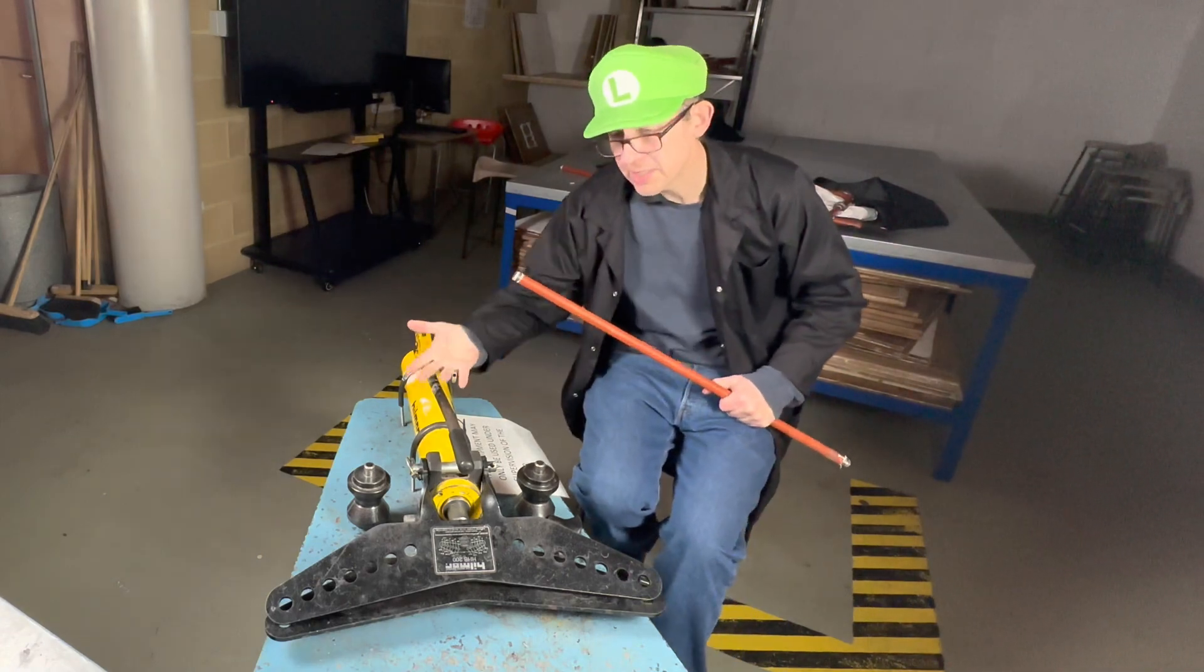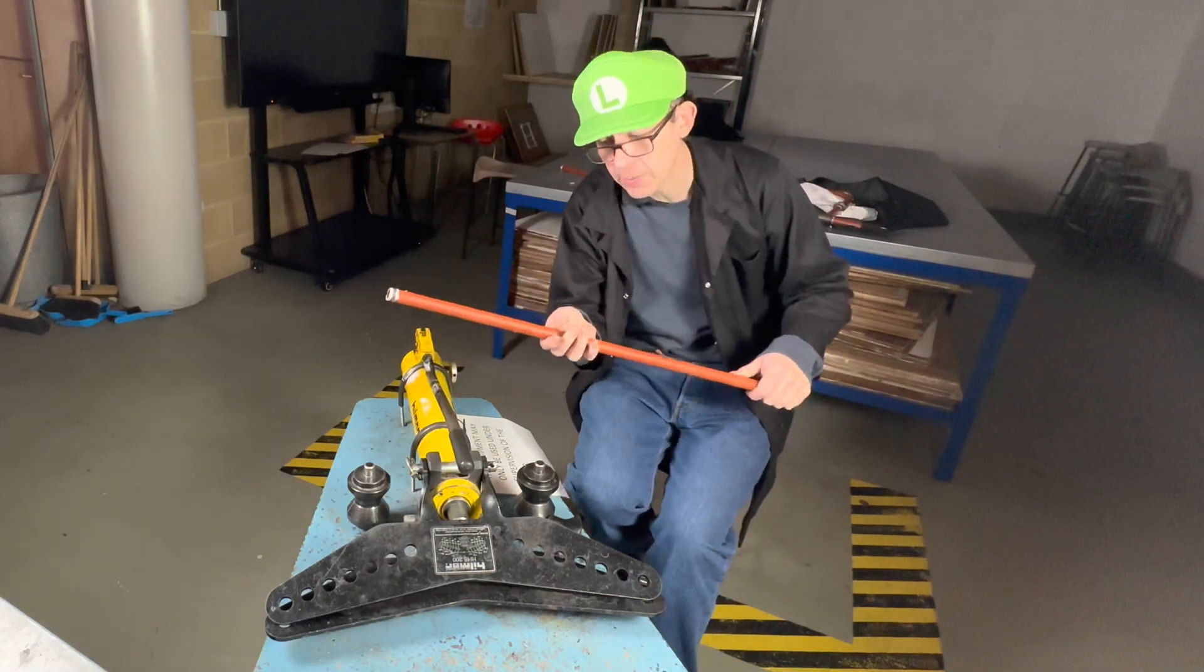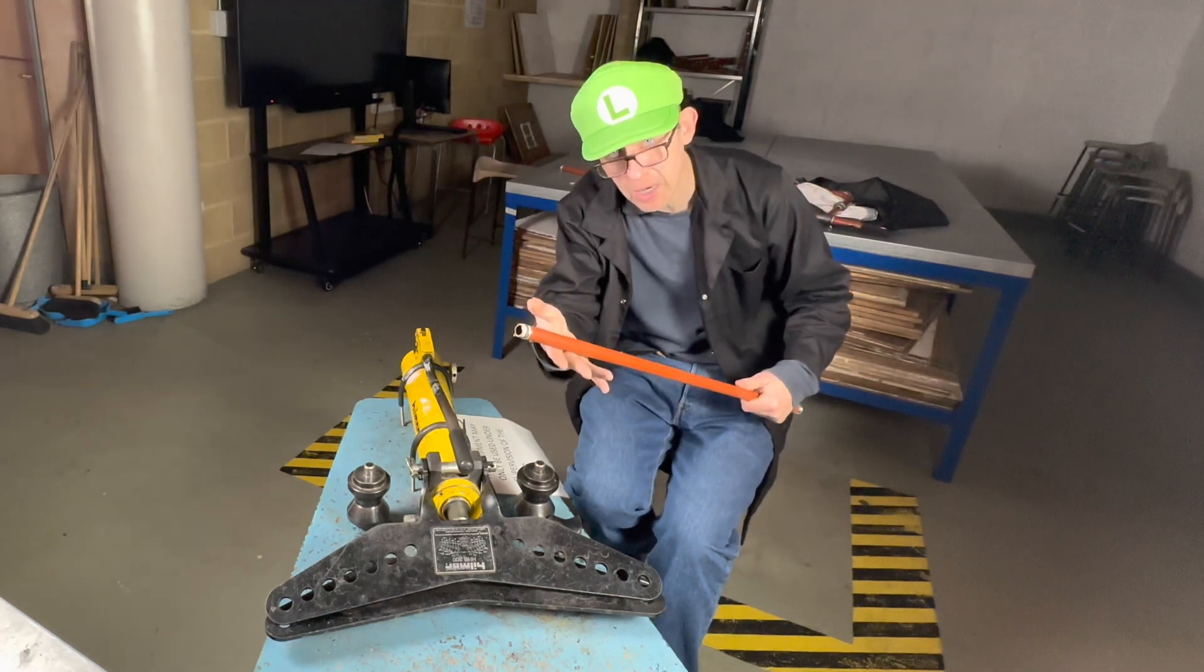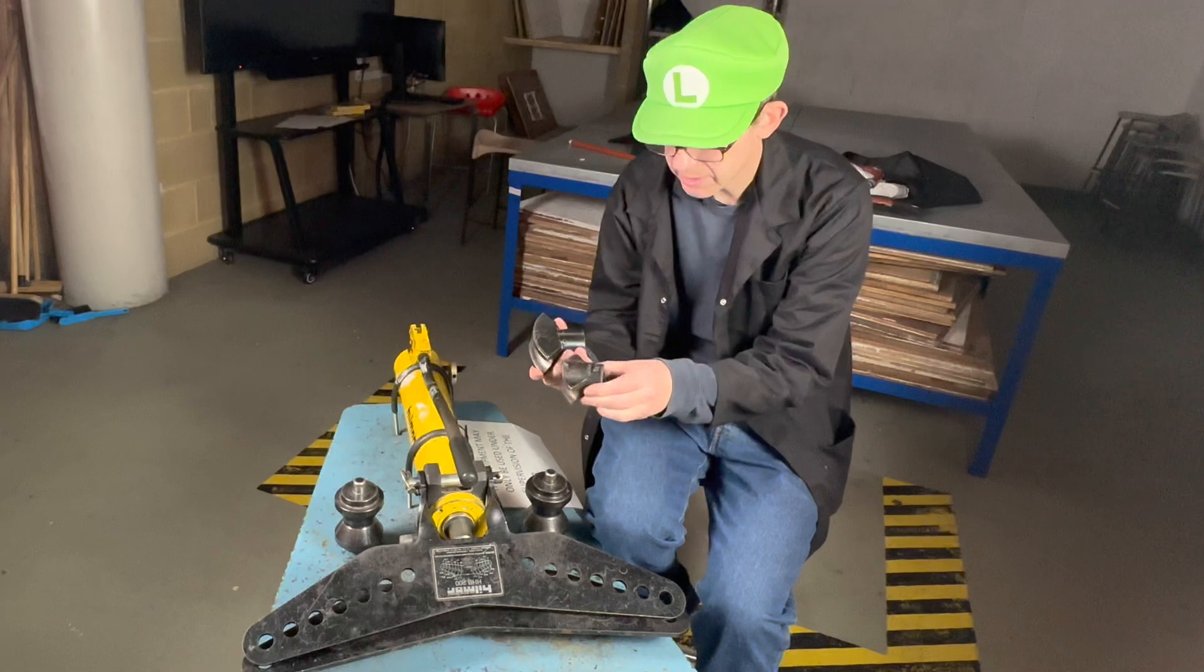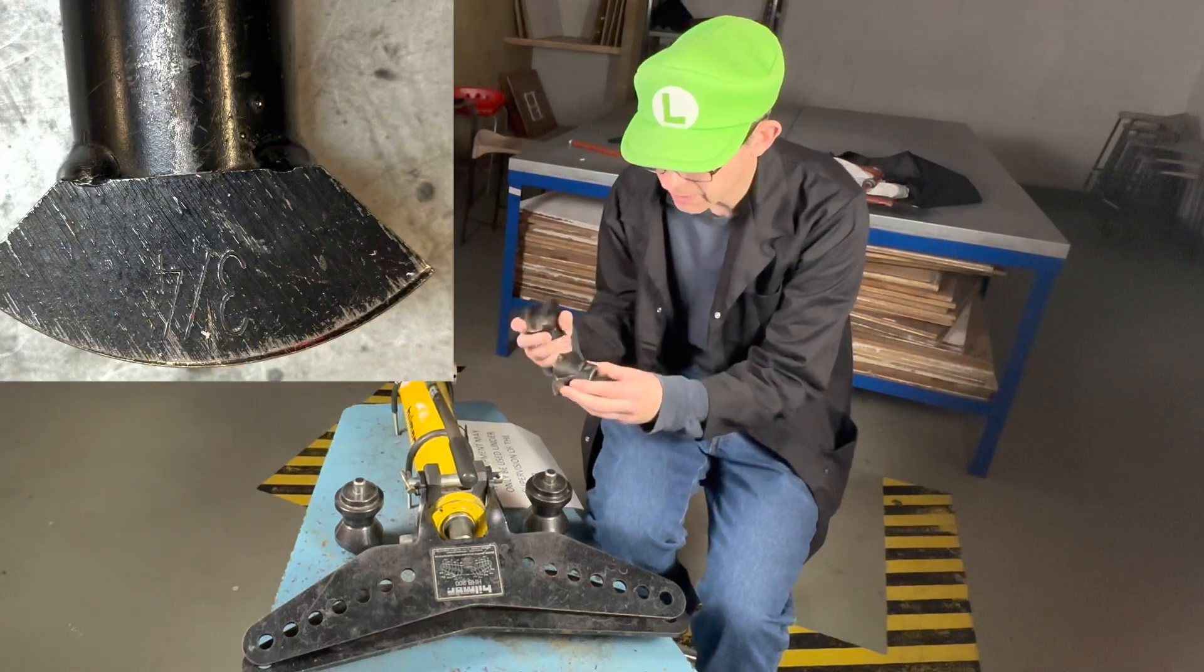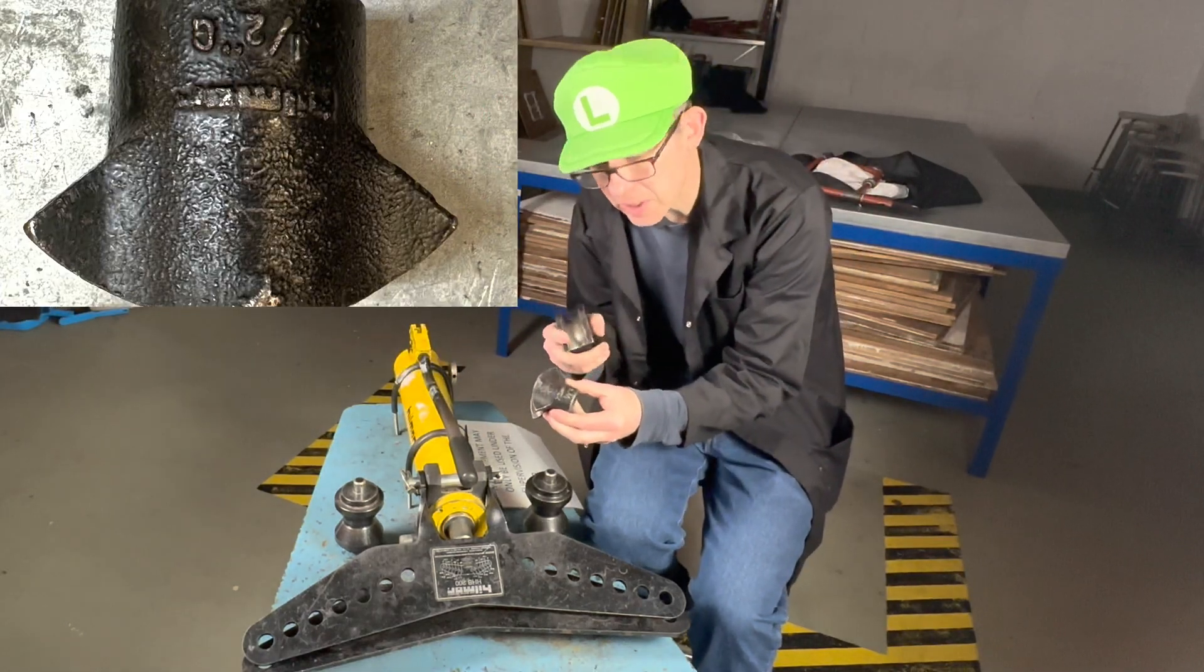First of all we need to set up the pipe bender. Today we're going to be bending half inch low carbon steel pipe, so we need to pick the right former. This one says three quarters, this one here says half inch on it.